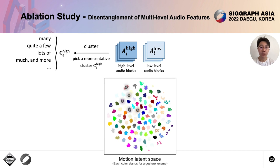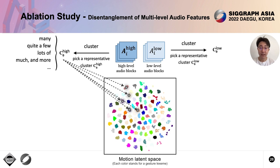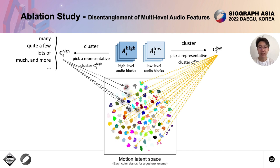To show the ability of disentanglement, we cluster all high-level audio blocks and get several clusters, where each cluster essentially indexes audio clips with similar semantics — for example, 'many,' 'quite a few,' 'lots of.' This cluster only corresponds to a few gesture lexemes. But if we do the same process for the low-level audio blocks, the clusters correspond to most of the gesture lexemes. These experiments confirm the correlation between high-level audio features and gesture lexemes, as well as the semantic disentanglement of multi-level audio features.